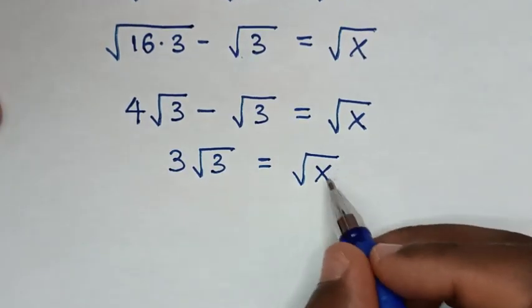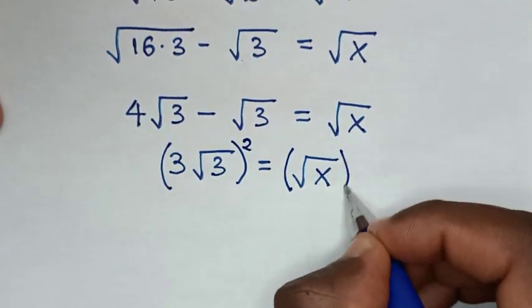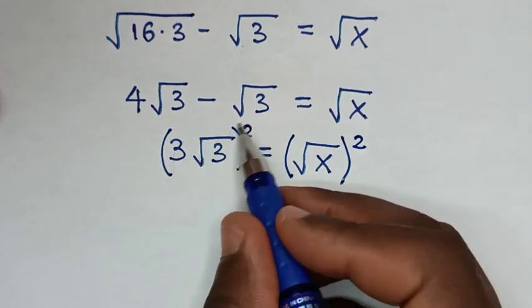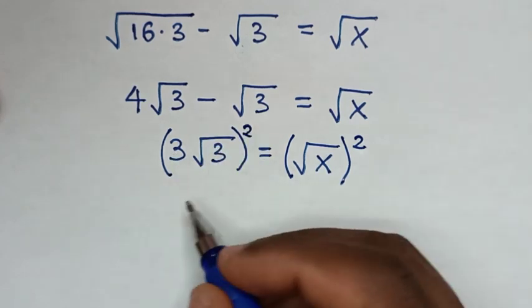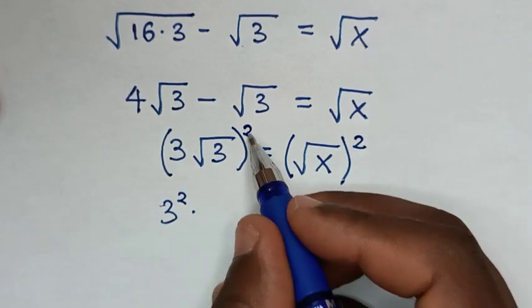To find the value of x, we will square both sides. When we take this square inside the bracket, it will be 3 squared times square root of 3 squared.